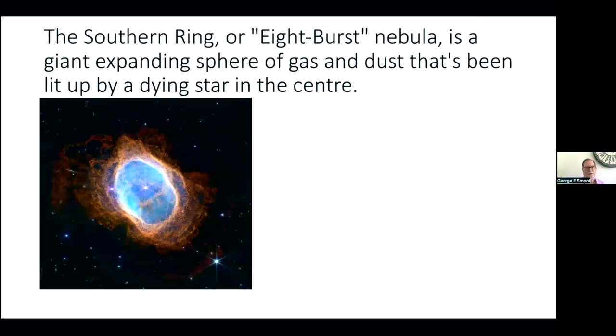One of the first pictures that was released was the Southern Ring, or the Ace Burst Nebula, which is a giant expanding sphere of gas and dust that's lit up by a dying star at the center. You can see the star in the center, and you can see the cloud that's around it being blown out. There's a hot center cavity, and then the dust is cooling as it comes further out.